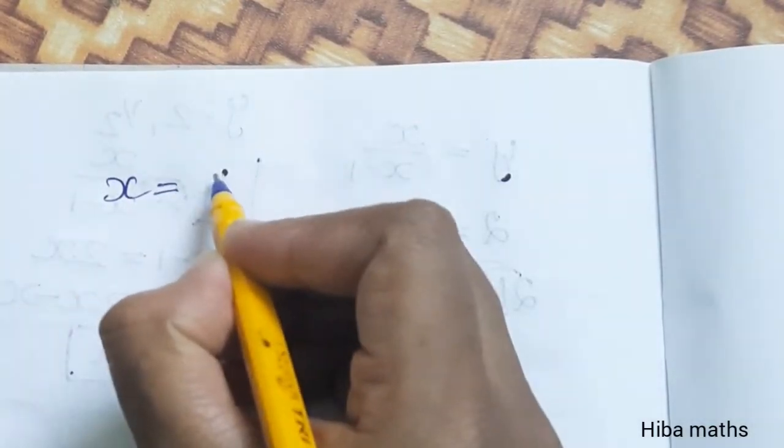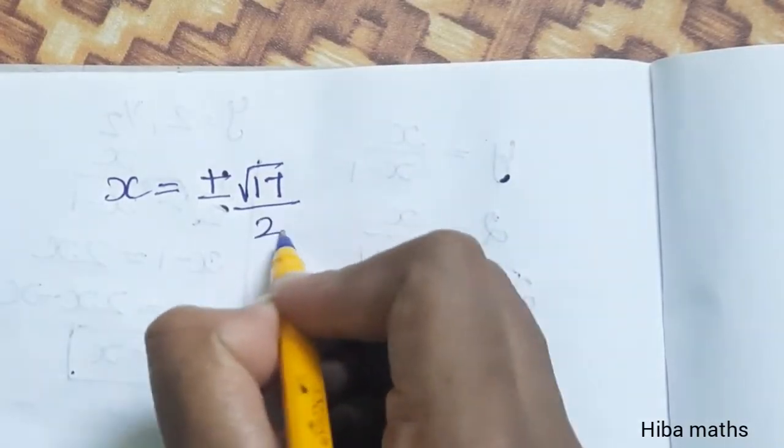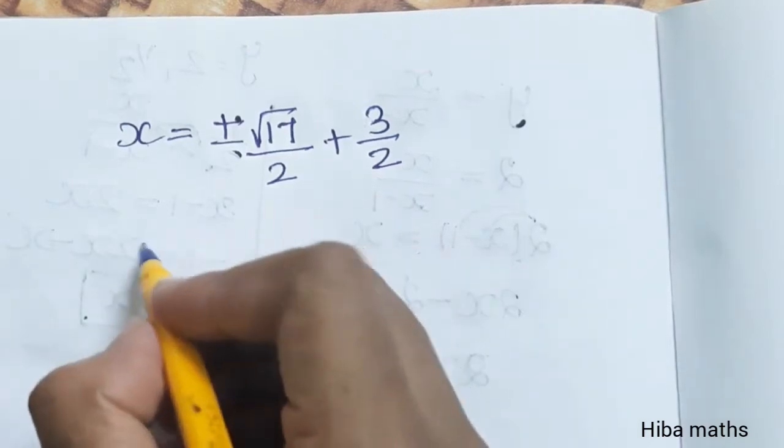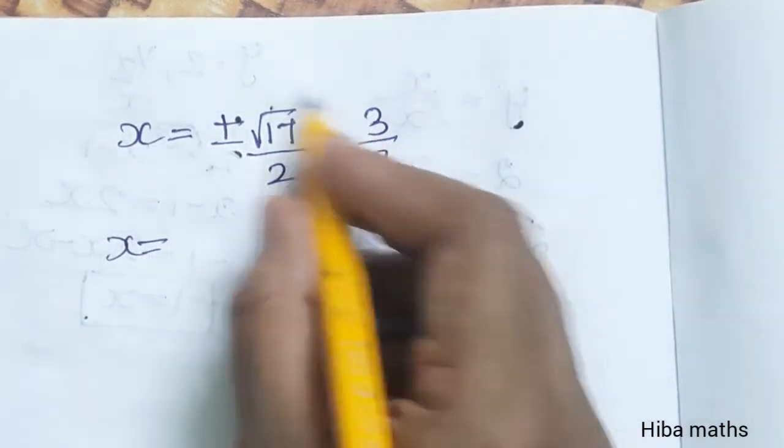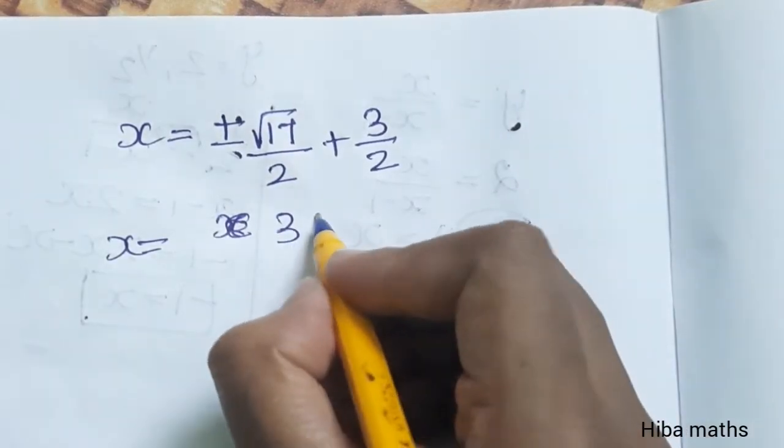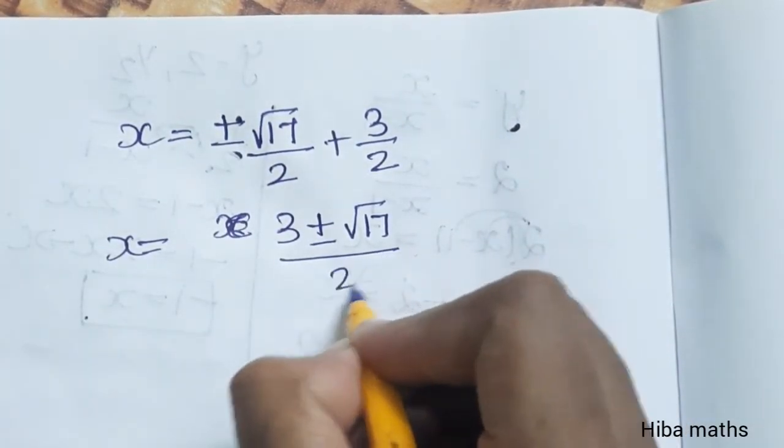x - 3/2 equals plus or minus √17/2. So x equals 3/2 plus or minus √17/2. Since the denominator is 2, we can combine: x equals (3 ± √17)/2.